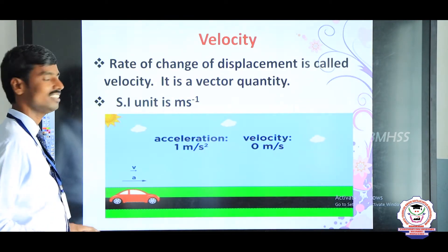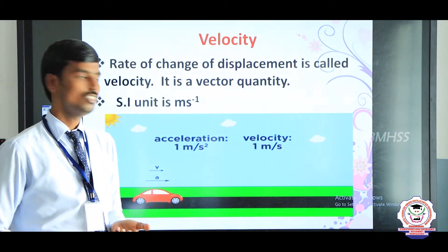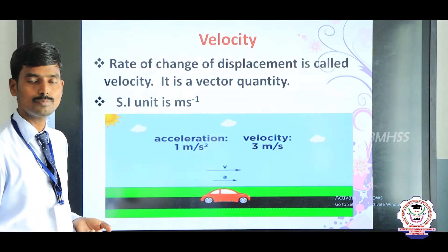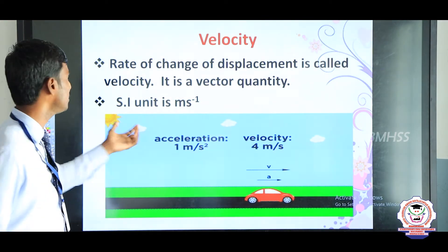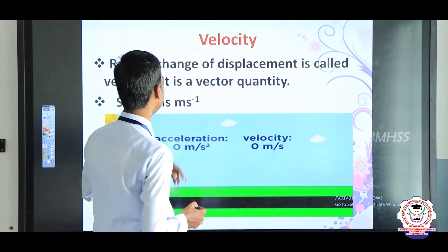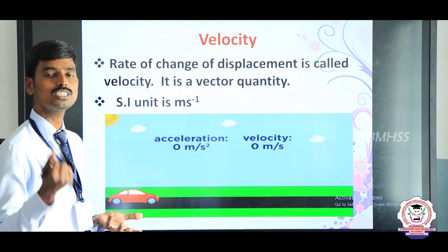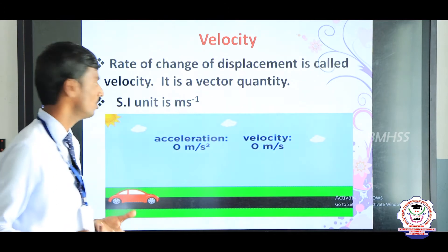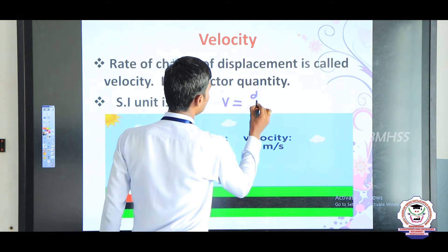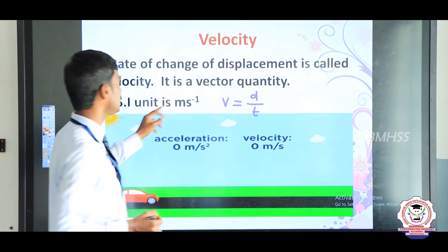Next is velocity, which is a basic concept. Velocity is nothing but the rate of change of displacement — we call this velocity. In other words, velocity equals displacement divided by time taken, or v = d/t. Velocity is a vector quantity — a vector quantity is any quantity that possesses both magnitude and direction. The SI unit of velocity is meter per second.